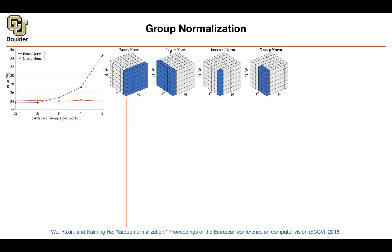There is layer normalization. This one is not sensitive to your batch size because you compute your statistics across the channel dimension and the height and width dimension. You subtract the mean from each pixel and divide by the standard deviation. However, layer normalization is not going to give you good performance for images — it is usually used for recurrent neural networks.